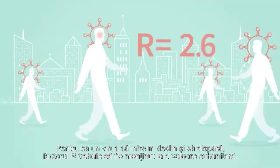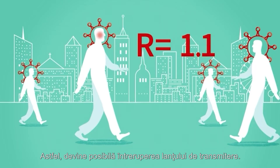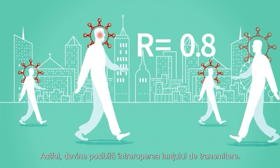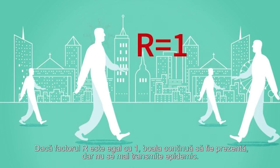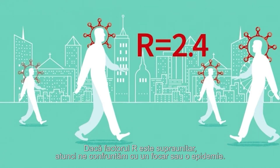For a virus to decline and disappear, the R number must be kept below 1. This makes it possible to break the transmission chain. If the R rating is equal to 1, the disease lingers without an outbreak. If the R rating is more than 1, there may be an outbreak or an epidemic.